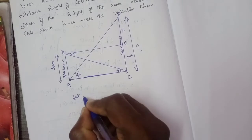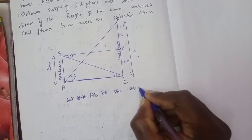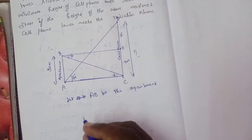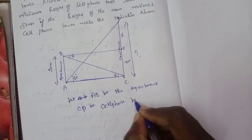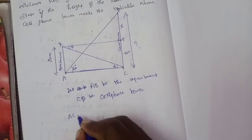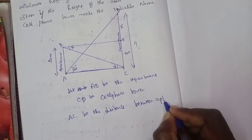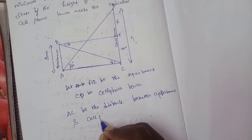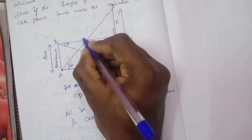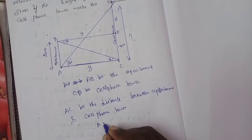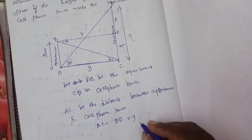First step: let AB be the apartment. Let CB be the cell phone tower. Let AC be the distance between the apartment and the cell phone tower. AC is opposite to B. D is equal to x.